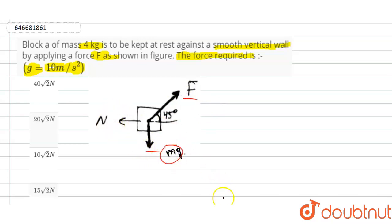According to that, for vertical equilibrium we will write F sin 45 degrees equals mg, so that will be equals to 40.